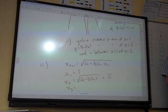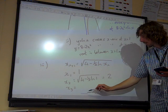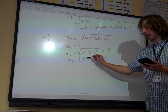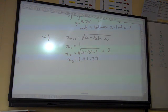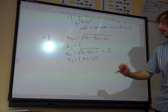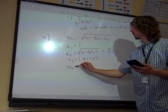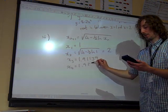x_3, and press execute or equals again, you get 1.91139. Press it again. x_4 is 1.91731.